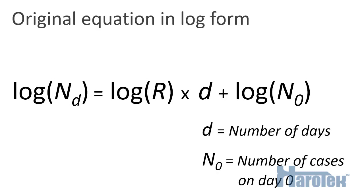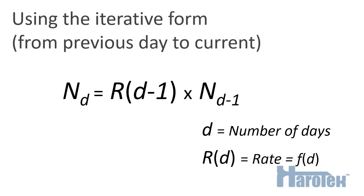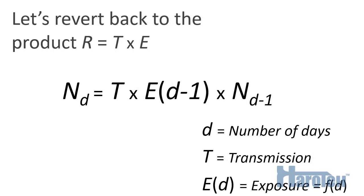We need to go back to our original equation and remove the logarithm. Instead of using the exponential form, we're going to use the iterative form. This means that the number of cases of the current day is equal to the number of cases of the previous day multiplied by the rate of the previous day. Then we go back to our definition of the rate, which is a multiplication of the transmission factor — which we assume is a constant — and the exposure factor, which changes as a function of day.